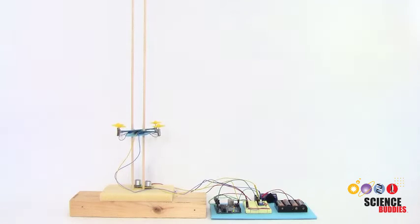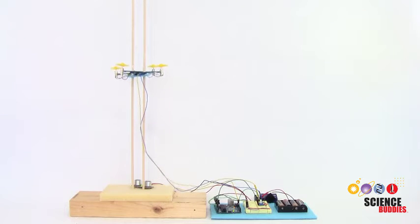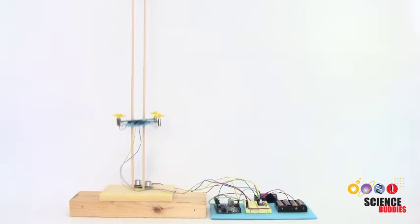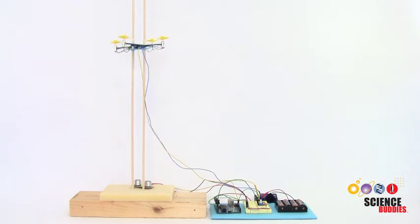You can also use the same circuit to make the drone automatically follow a pre-programmed path. For example, here it automatically oscillates up and down with no input from a human.